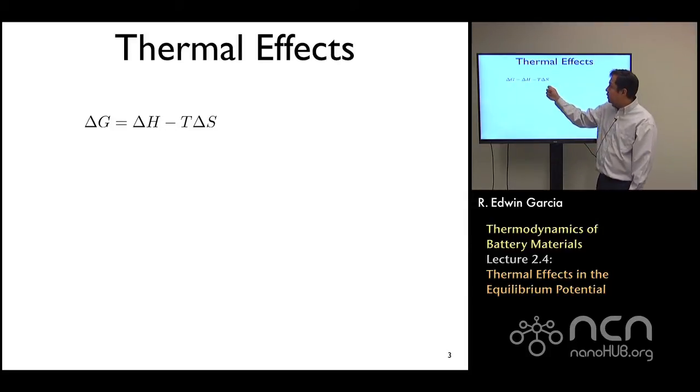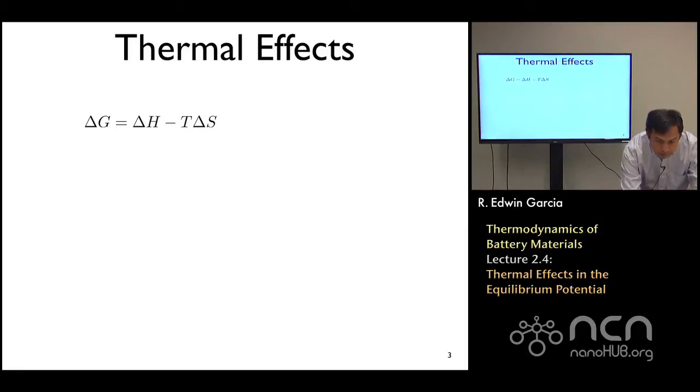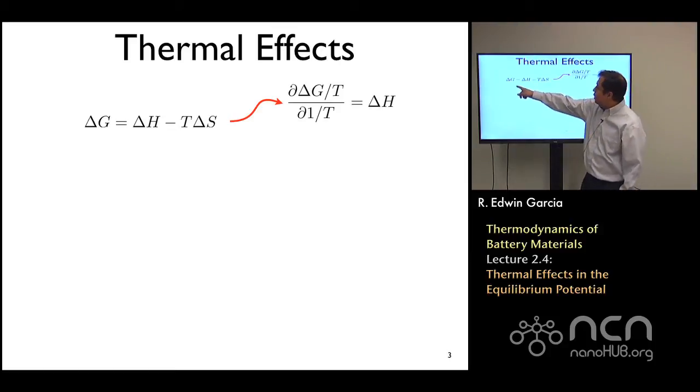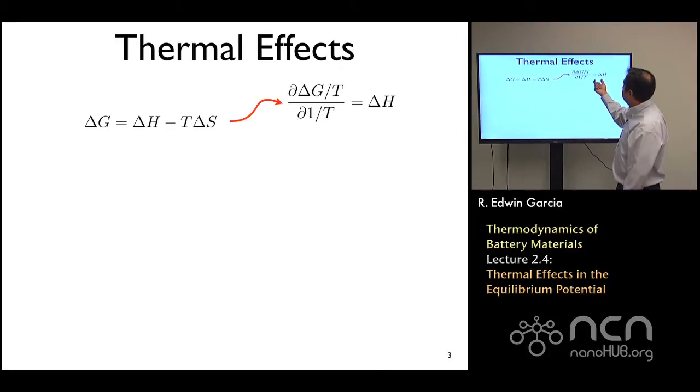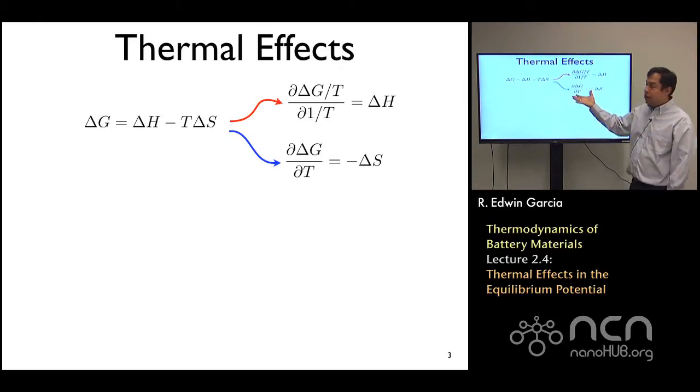We can relate how that ΔG relates to the enthalpy by making this very simple change of variables. Basically, we can divide ΔG by T, which cancels that T. If we assume that for the purposes of this transformation, ΔH is not dependent on temperature—which is true for very small changes in temperature—then that derivative gives me effectively ΔH. And we can do the same for the entropy: simply take the derivative of the Gibbs free energy with respect to temperature. This is a very classic thing to do in a standard thermodynamics book, and that will give me the entropy of the system.